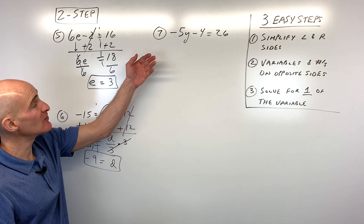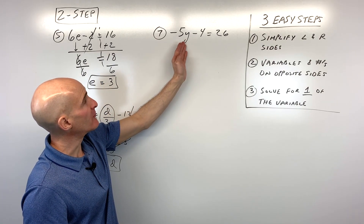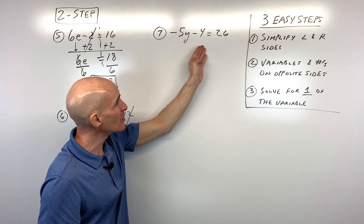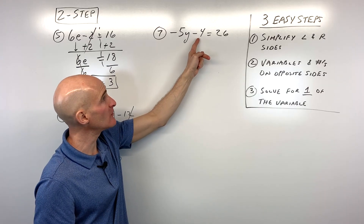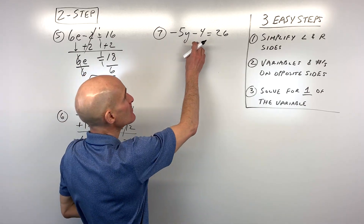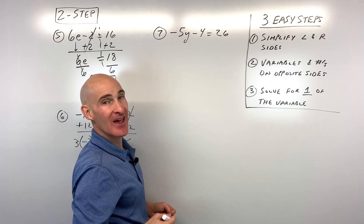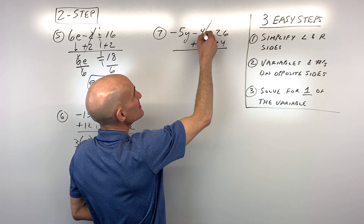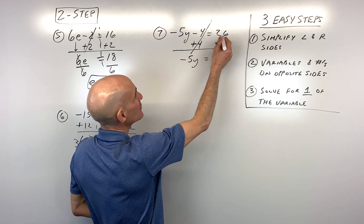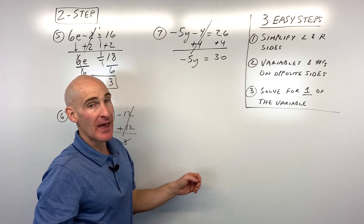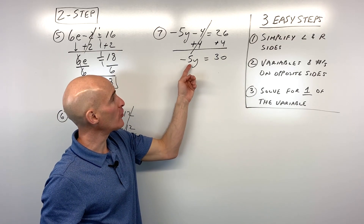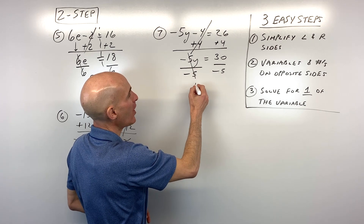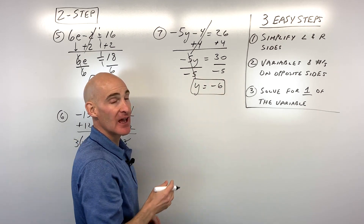Number seven has variables on the left and numbers on both sides. We want to get variables on one side and numbers on the other. To move the negative 4, do the opposite — add 4 to both sides. Those cancel and 26 plus 4 is 30. Now solve for one variable: instead of multiplying by negative 5, divide both sides by negative 5. Those cancel and y equals negative 6.